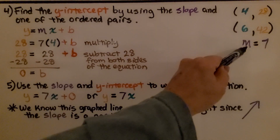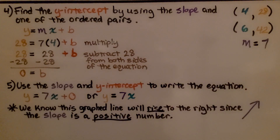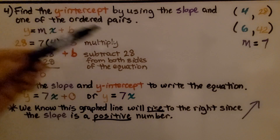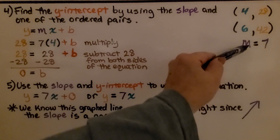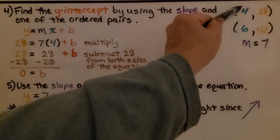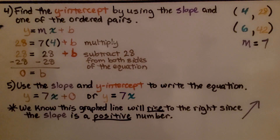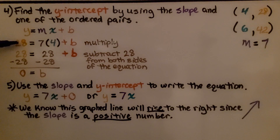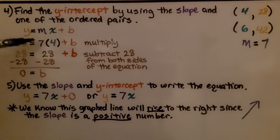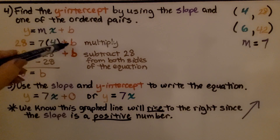We have our ordered pairs and we know our slope m is 7. We find the y-intercept by using the slope and one of the ordered pairs. We'll use 7 for our slope and the first ordered pair, (4, 28). The slope-intercept form is y = mx + b. We put 28 for y, 4 for x, and 7 for the slope, plus b.